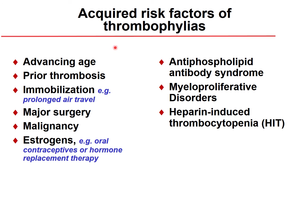Acquired risk factors for thrombophilia include aging, prior thrombosis, immobilization (such as prolonged air travel, bed rest during illness, or post-surgical recovery), malignancy, and estrogen treatment or hormone replacement therapy — especially in those with Leiden mutation, where the risk of thrombus formation increases more than 100-fold.